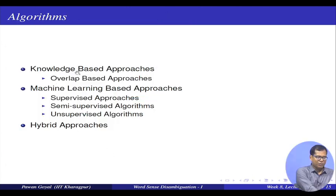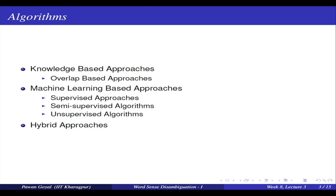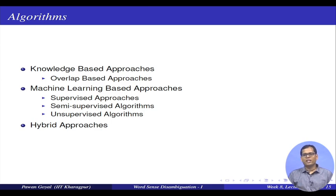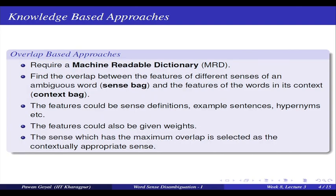There are many different algorithms that handle this problem. There are knowledge-based approaches that use different overlap-based methods. Then there are machine learning-based approaches — supervised, unsupervised, and semi-supervised — and also hybrid approaches. We will talk about some very basic methods so that you have the intuition for what are the different features and methods you can apply for word sense disambiguation. Starting with knowledge-based approaches: they are overlap-based and require a machine-readable dictionary, like WordNet.